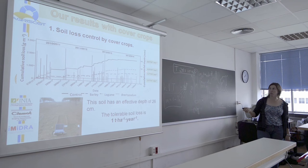The mean soil loss over these four seasons was 6.8 tons per hectare per year for control, 4 for legume, 2.7 for barley, and 1.4 for Brachypodium distachyon.